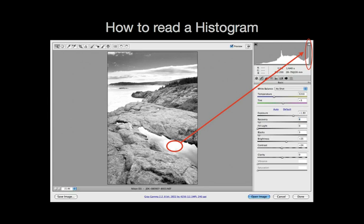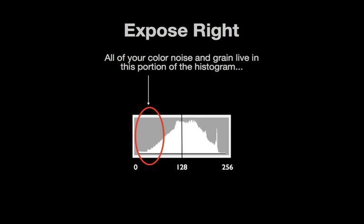So how does this knowledge translate into exposing the images in your camera correctly? Well, the rule is pretty simple. You want to expose your image in a way that the histogram falls in the middle of the graph, without clipping your shadow or your highlight information. But there are a couple things that you should know.